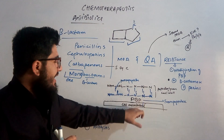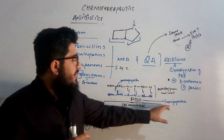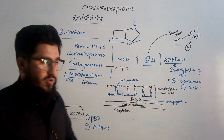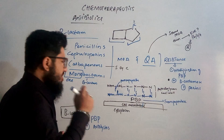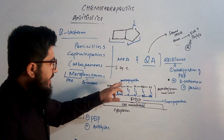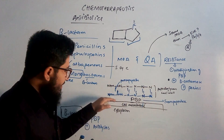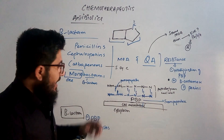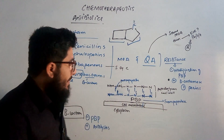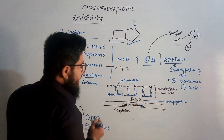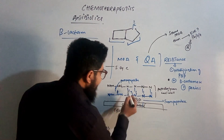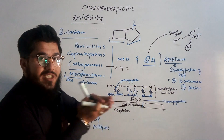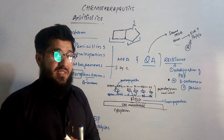The penicillin binding protein (transpeptidase) plays a very important role in cell wall synthesis. From one peptidoglycan chain, there is an elongation of a pentapeptide, and the same elongation occurs from the next chain. These two chains prolong their pentapeptides, and these pentapeptides are cross-linked by the transpeptidase (PBP). When these chains are cross-linked, the peptidoglycan cell wall is synthesized.